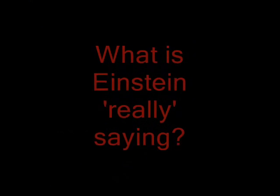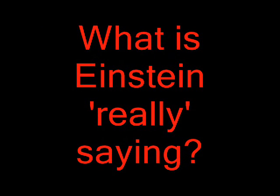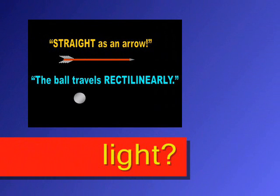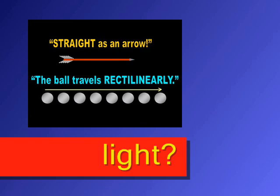So what is Einstein really saying? Is he saying that light is an extended object that is straight as an arrow? Or is he saying that light consists of a series of discrete little balls that travel rectilinearly?